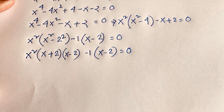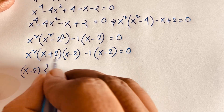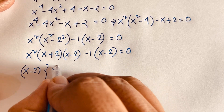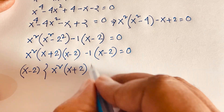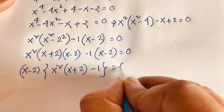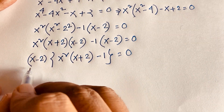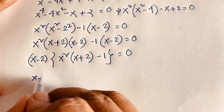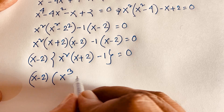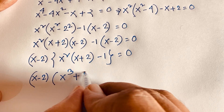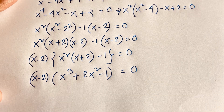We can see that (x - 2) is a common factor. Factoring (x - 2) out: dividing x²(x + 2) by (x - 2) gives x² times (x + 2), and dividing -1 by (x-2) gives -1. So the expression becomes (x - 2)(x³ + 2x² - 1) = 0.